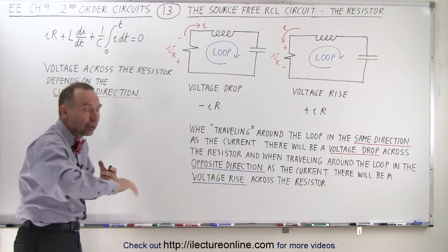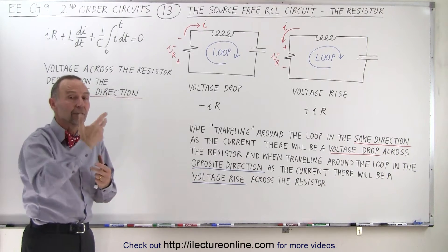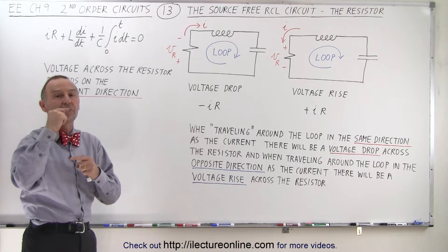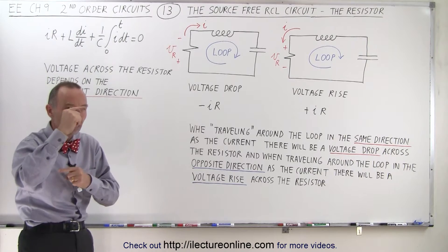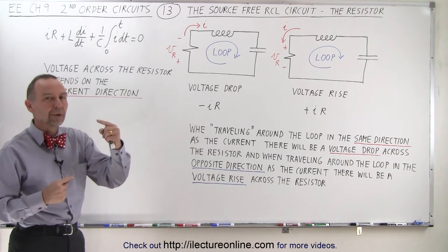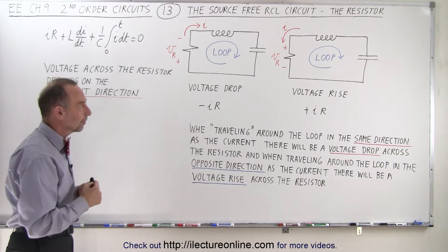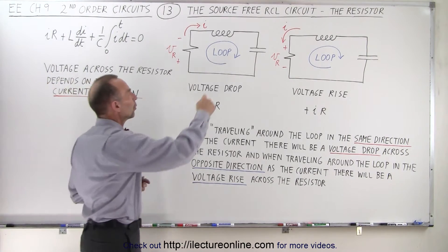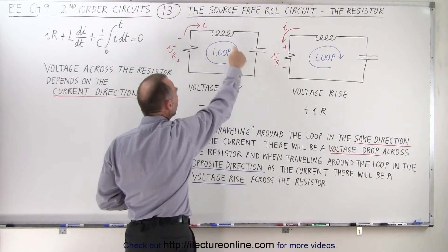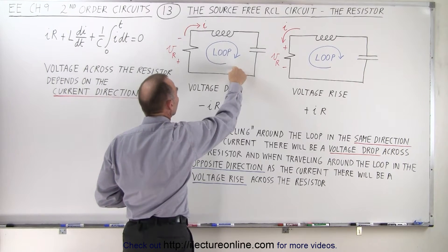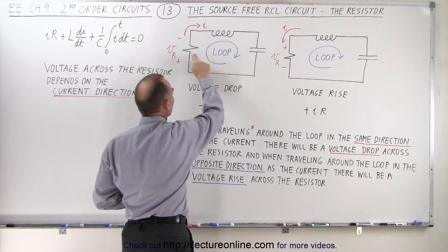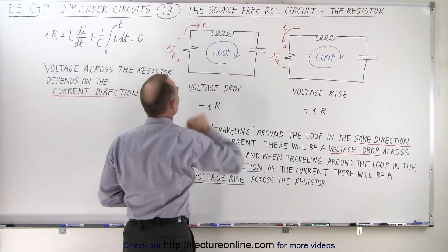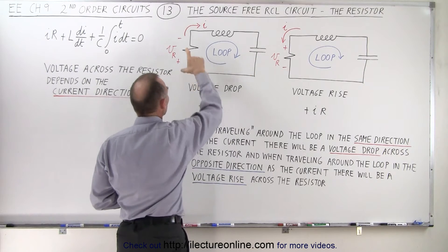If the current then changes direction, the polarity of the voltage will flip in the opposite direction. So let's say that we go around a KVL loop around the circuit — across the resistor, the inductor, and the capacitor.